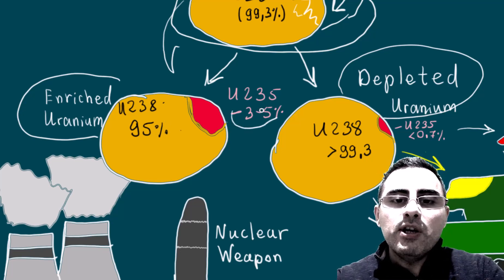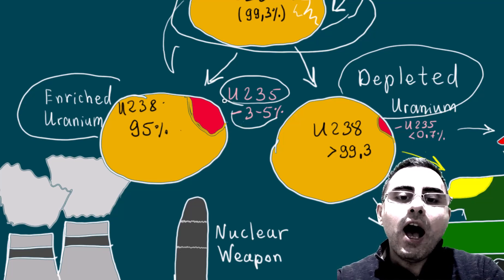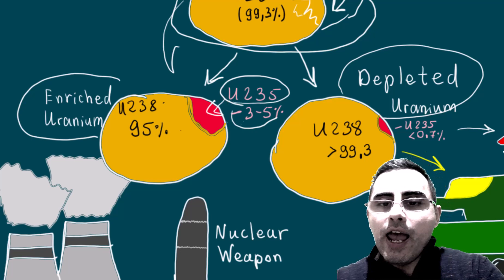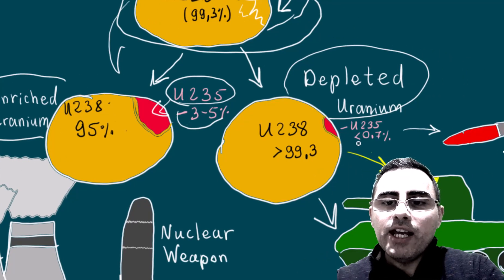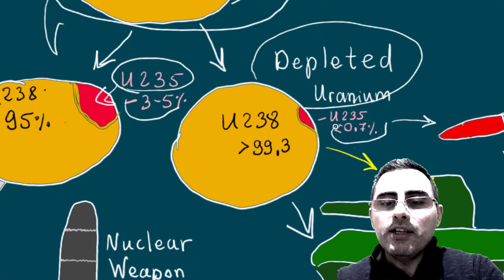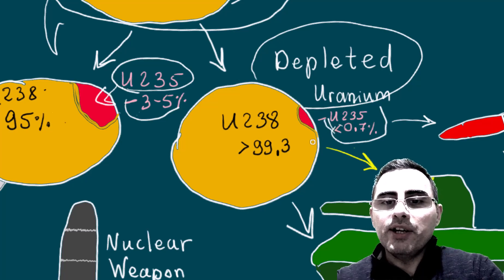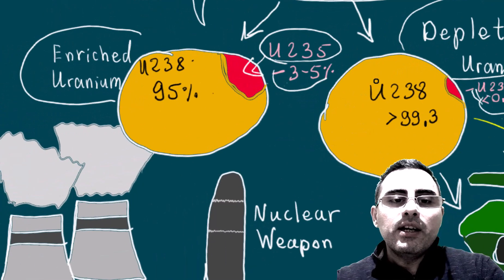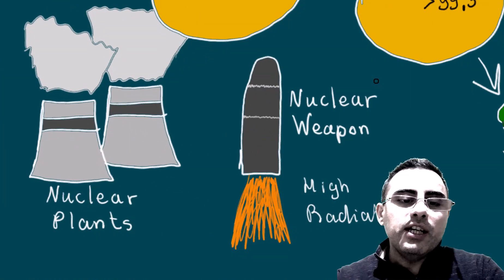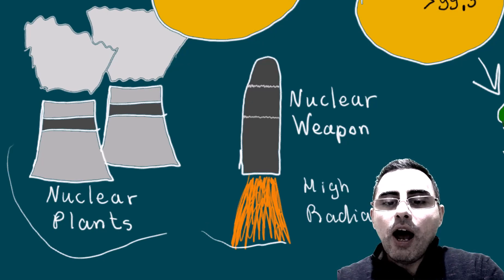One is called enriched uranium, second is called depleted uranium. Enriched uranium contains three to five percent of U-235, or it contains three to five percent of high radioactive component. And depleted uranium contains less than 0.7 percent of U-235, which means it is less radioactive, and it is called depleted uranium.